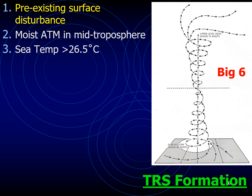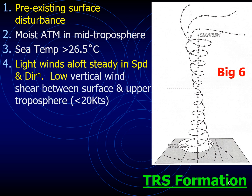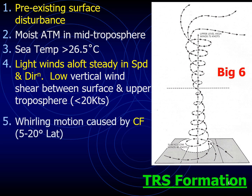TRS never originate over land. Since the whirling motion in a TRS is caused by the Coriolis force, which is weak at the equator, TRS are more likely to form in late summer when the tropical front is situated some distance away from the equator — that is July to October in the northern hemisphere and January to April in the southern hemisphere. TRS do not form in the South Atlantic because the intertropical front seldom moves sufficiently south of the equator.